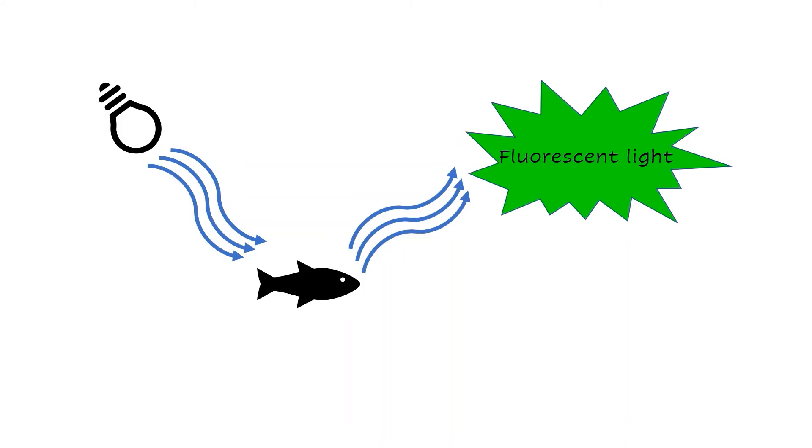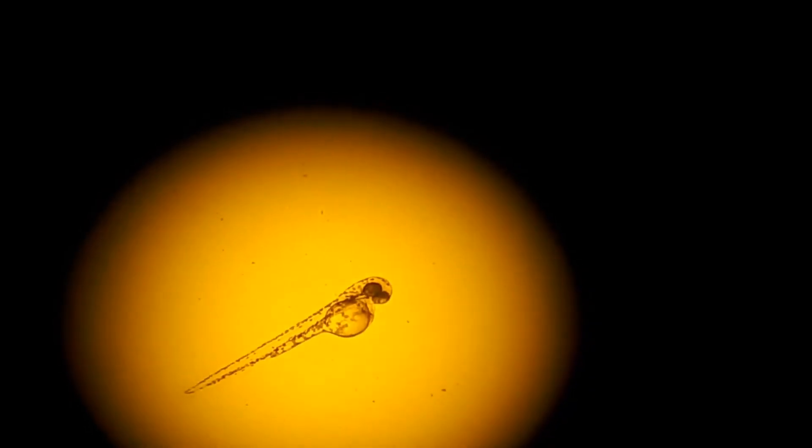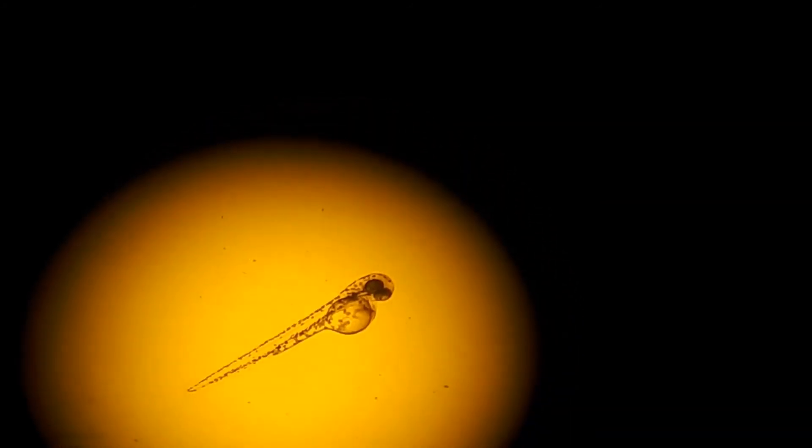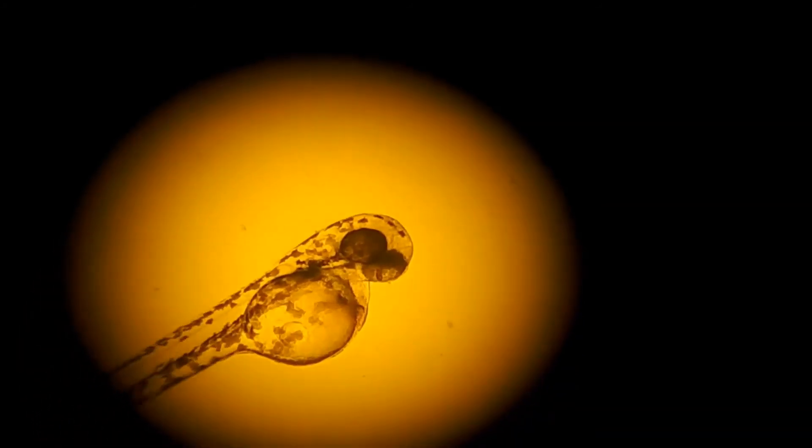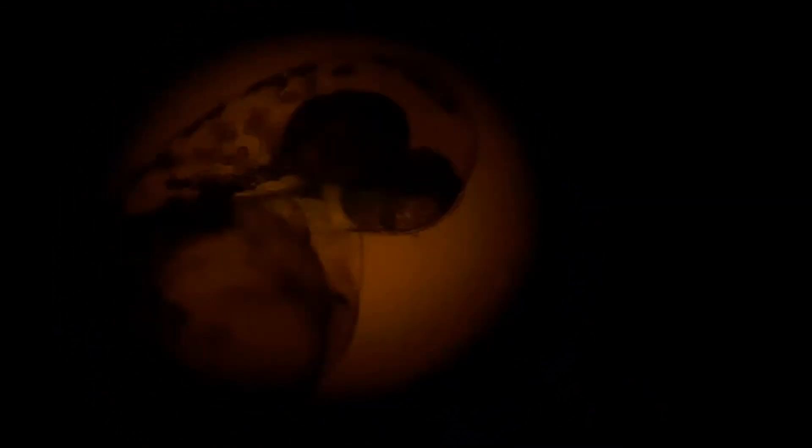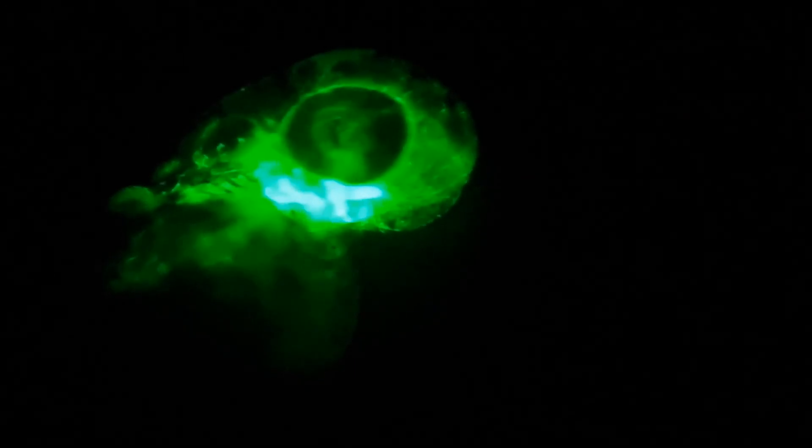Let's have a look at one of the fish under the microscope. So here's one of the fish embryos. If I zoom in a little bit, we'll be able to see the heart beating. There, can you see the heart? Now, if we turn on the special light bulb, it shines green. Look at the heart now.